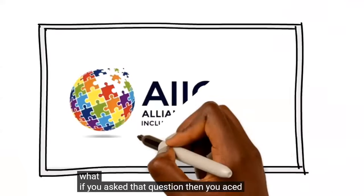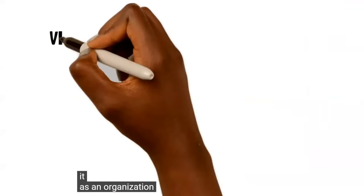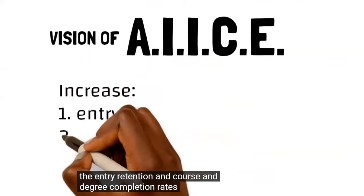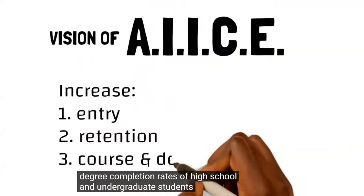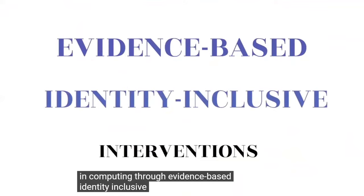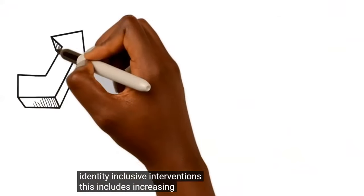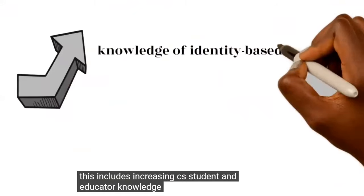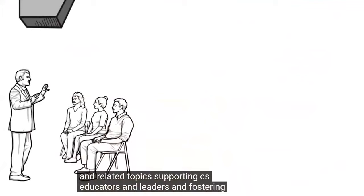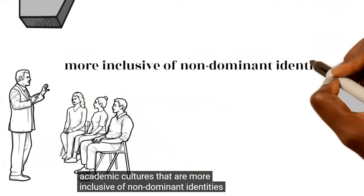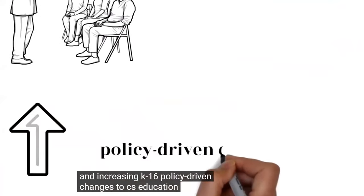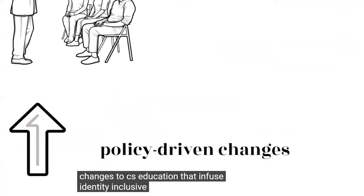As an organization, ACE aims to increase the entry, retention, and degree completion rates of high school and undergraduate students from groups historically underrepresented in computing, through evidence-based, identity-inclusive interventions. This includes increasing CS student and educator knowledge around identity, supporting CS educators and leaders, fostering more inclusive academic cultures, and driving K-16 policy changes that infuse identity-inclusive strategies.